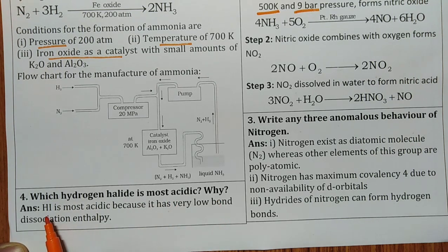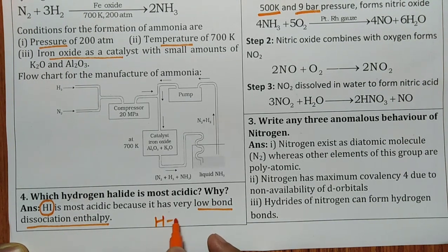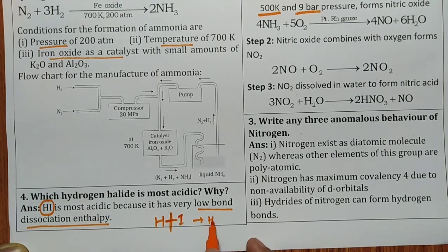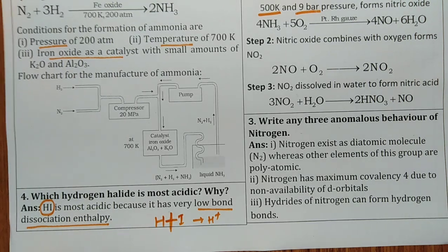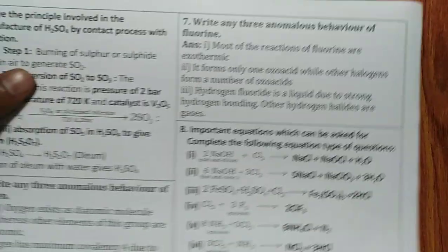The fourth one is which hydrogen halide is most acidic. Why? So hydrogen iodide. Remember HI is most acidic because it has very low bond dissociation enthalpy. This is the fourth question. Then we will see fifth question.